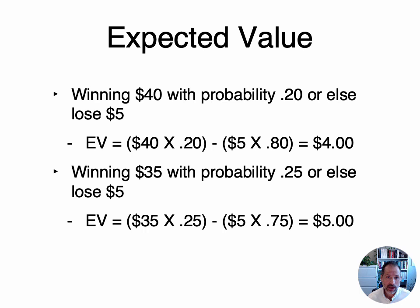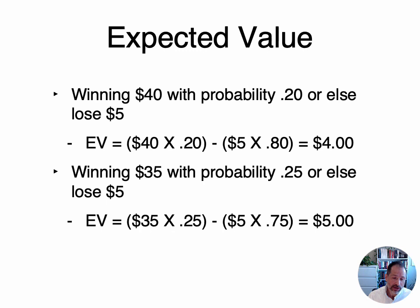The example I gave is pretty simplified — there's no loss. But you can also do this with losses. Suppose you have a $40 win with a probability of 0.2, or else you lose $5 each time. You calculate it the same way: $40 times 0.2, minus $5 times 0.8. This gives you a much lower expected value, so this one costs a little bit more. The second choice is still better though, because you have a higher probability of getting $35 and a lower probability of losing $5 — so that's a $5 expected value, still the better choice across the long run.